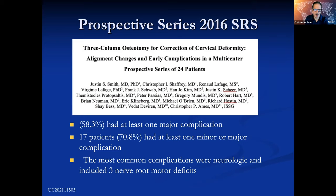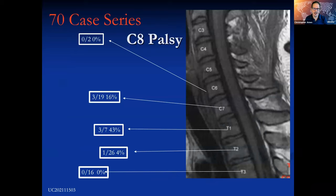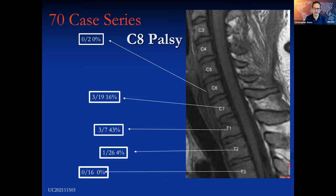This is our work on complications, headed up by Justin Smith. I never want to finish a talk without saying these patients have high complication rates. The main complication we've struggled with in our practice is C8 palsy. We've been progressively moving our osteotomies lower — we used to do a lot at C7, now we almost never do C7. We really try to do these at T2 or T3 if possible to avoid that nerve issue. Moving the osteotomy lower is not only more powerful, it also avoids the C8 nerve issue.